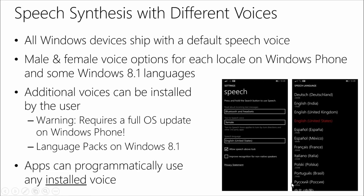On Windows 8.1 it's the same thing. You go to language settings, add a language, and download what's called a language pack. The language pack lets you change the default culture of the Windows UI to a different language. But even if you don't change the UI, you can still install a language pack, which comes with the voices. For example, on my own computer I've installed a French voice. Even though I keep Windows in English, I like having the option of the French voice since I speak French. And remember, your apps can then access any voice that's already been installed programmatically.